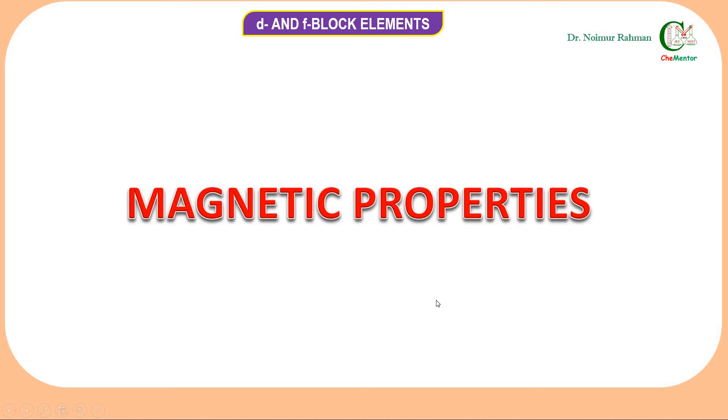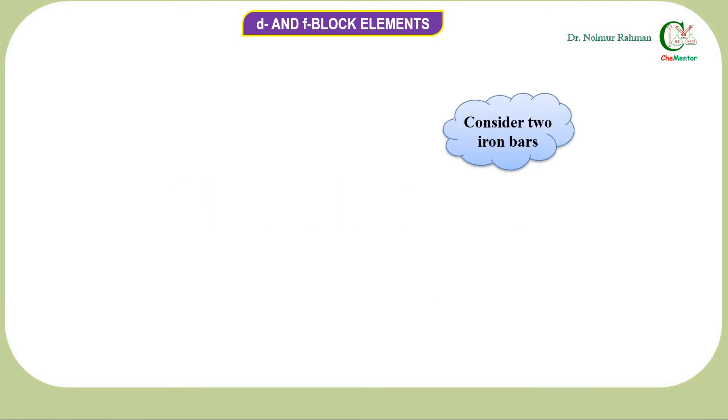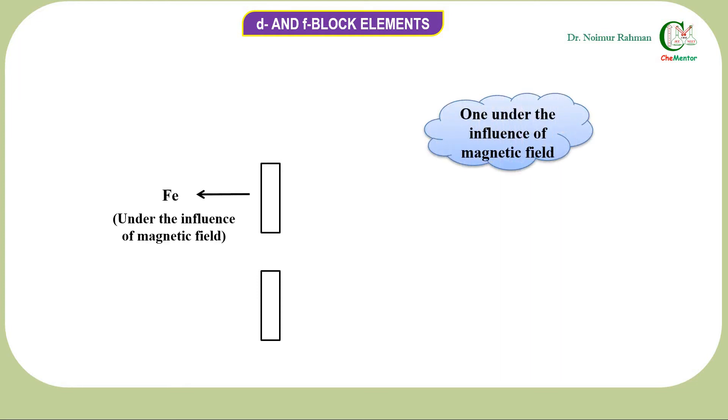First, let's start with magnetic properties. Consider two iron bars, one with the influence of magnetic field, the other without the influence of magnetic field.